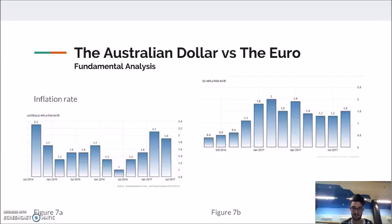As RMIT financial markets course materials state, a high inflation rate compared to a trading partner creates less demand for exports and therefore less demand for AUD, and more demand for imports, thus increasing supply of the AUD. A higher inflation rate would in essence result in a depreciation of the currency. As shown in Figures 7a and 7b, Australia's inflation rate is 1.9% compared to the Euro area's 1.5%, and it can be estimated that depreciation of the Australian dollar against the Euro will continue while these inflation rates remain the same.